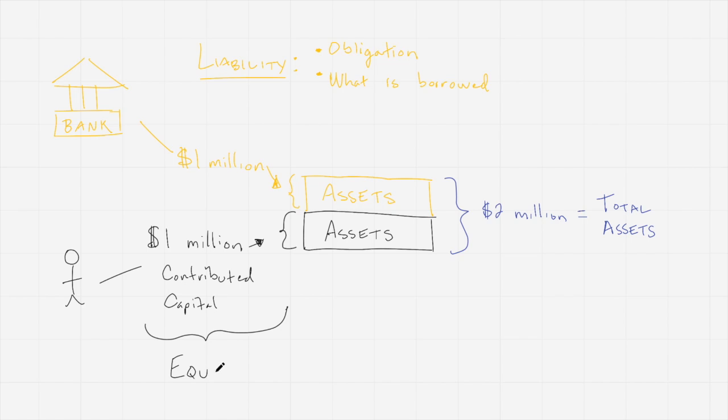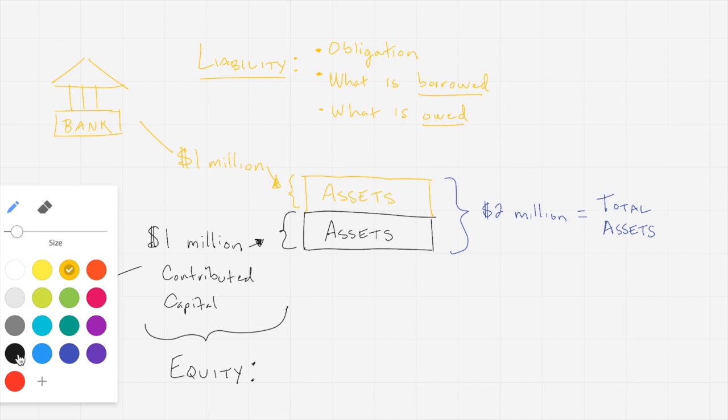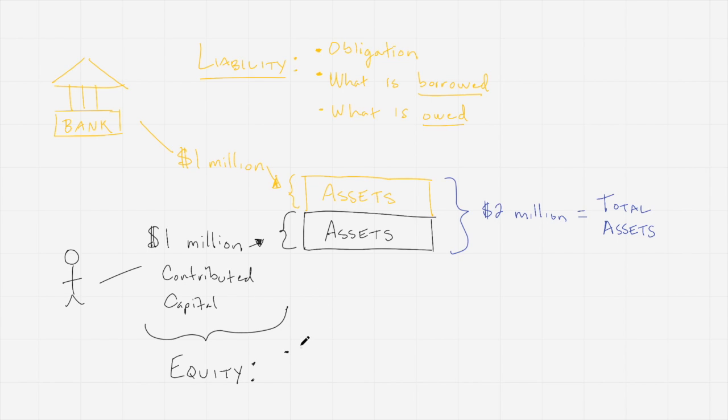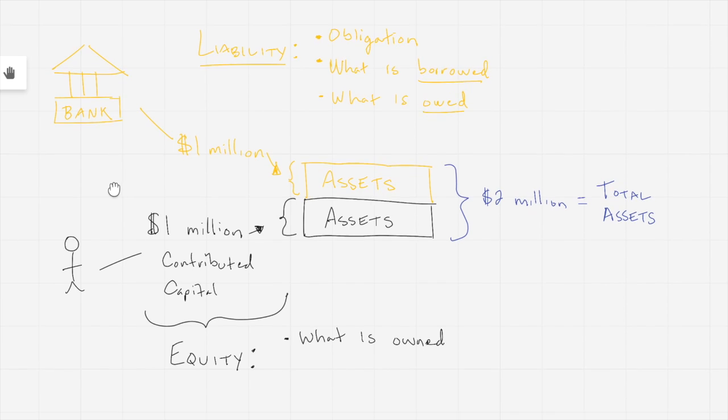So if liabilities are what is borrowed, or we could also say that a liability is what is owed, in other words, the business owes the bank this money for the loan. If liabilities are what is owed, then equity is what is owned, and that is owned by the owners of the company.